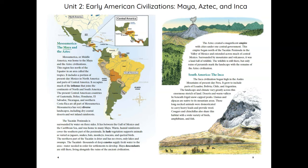Mesoamerica: The Maya and the Aztec. Mesoamerica, or Middle America, was home to the Maya and the Aztec civilizations. This region lies north of the equator in an area called the tropics. It includes a portion of present-day Mexico in North America and parts of Central America, occupying much of the Isthmus that joins the continents of North and South America. The present Central American countries of Guatemala, Belize, Honduras, El Salvador, Nicaragua, and northern Costa Rica are all part of Mesoamerica.